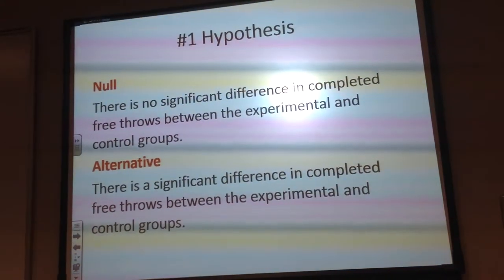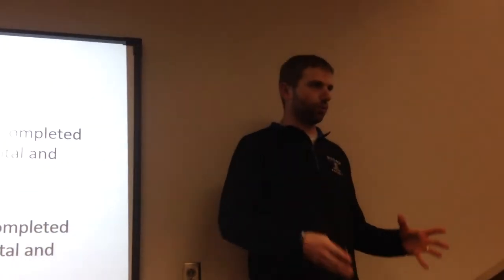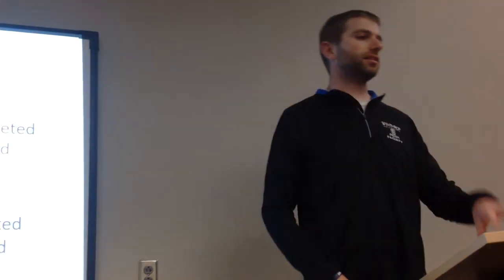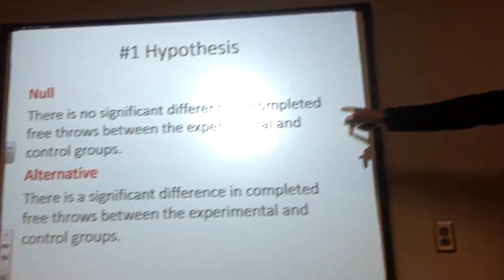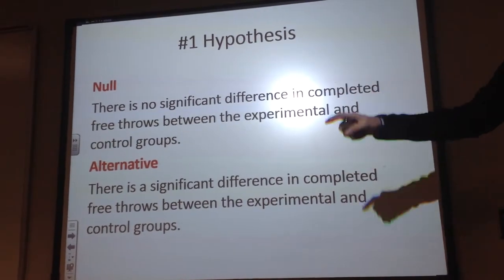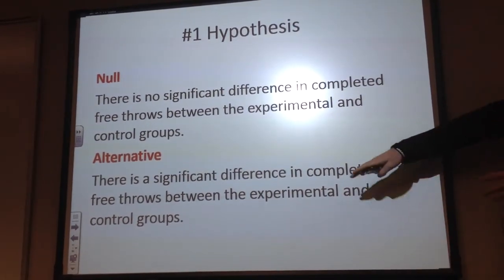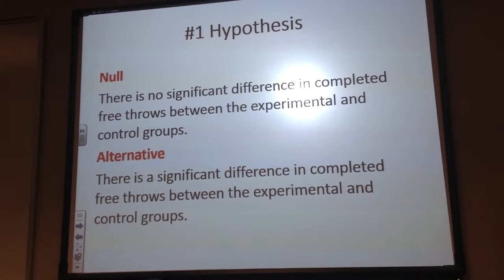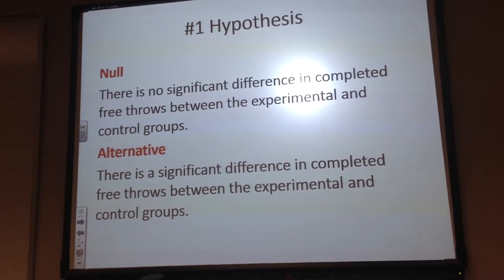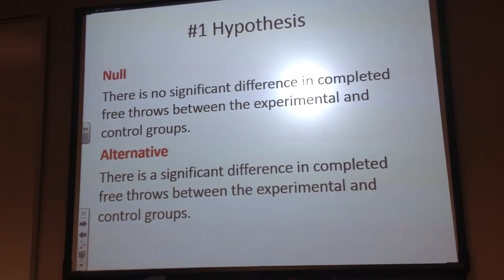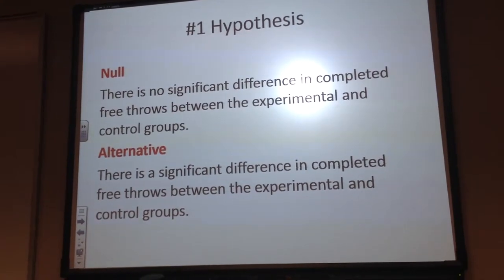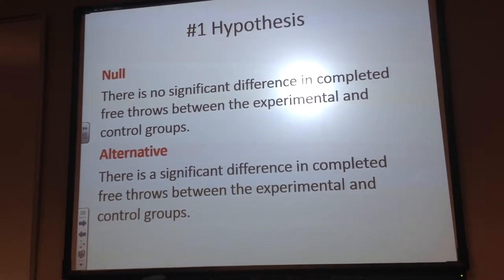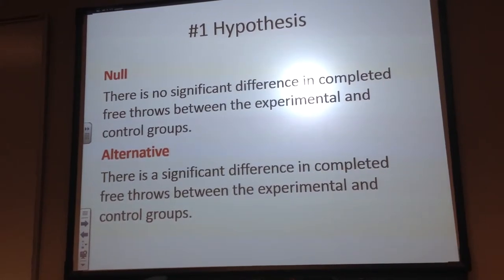The reason we make you do a null and an alternative is for statistics, because what these statistical tests are going to try and do is they're going to see if we can prove the null true. That's what we're actually trying to do. So we're trying to see, is the null true? And if our tests say no, then we can accept the alternative and reject the null. So that's why we have you write a null and an alternative. It's not just to make you write two hypotheses that look almost the same. There is a reason for it, and this is why.